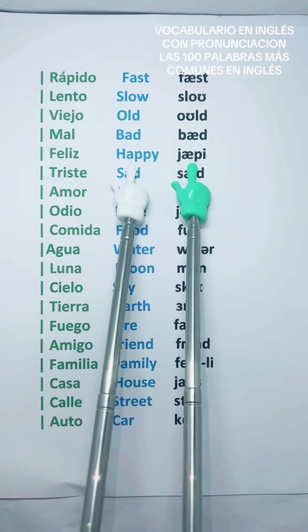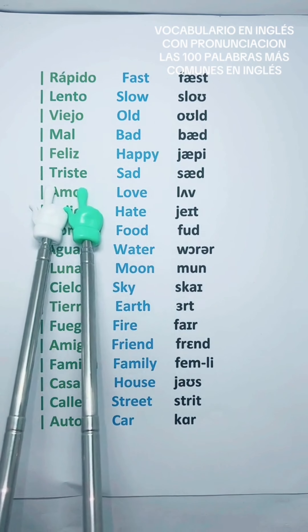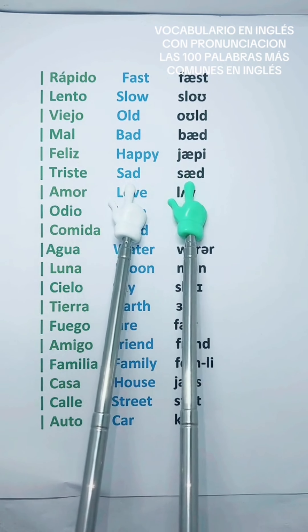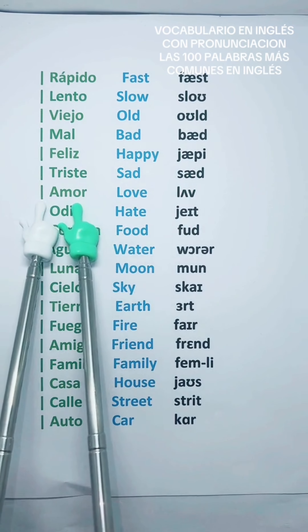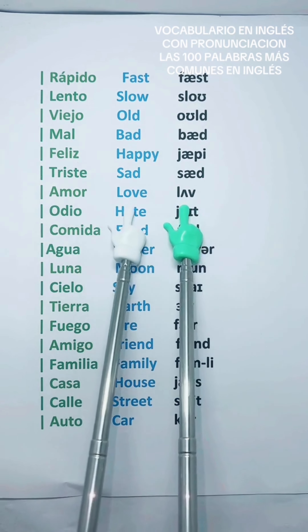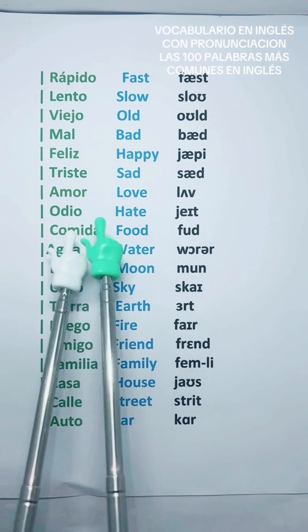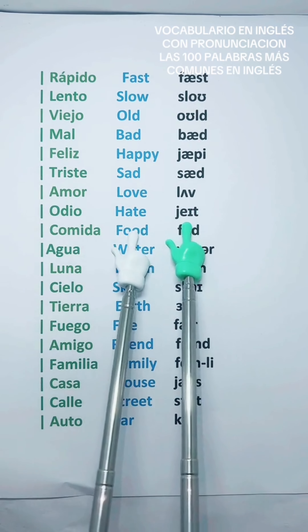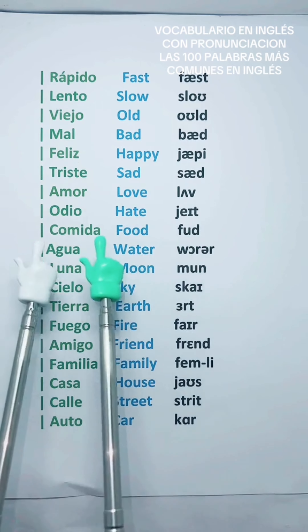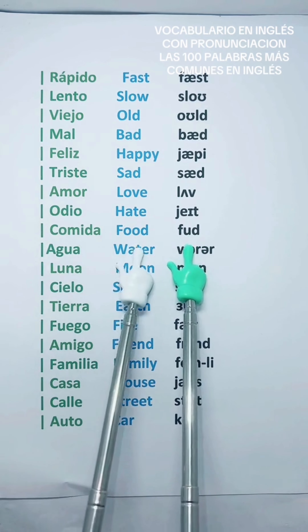Feliz — Happy. Triste — Sad. Amor — Love. Odio — Hate. Comida — Food.